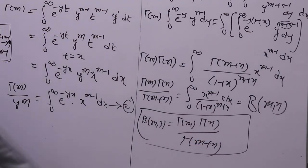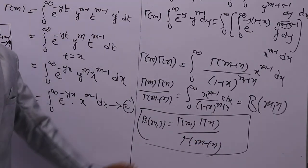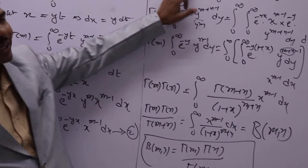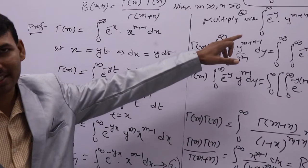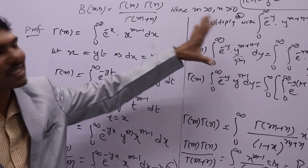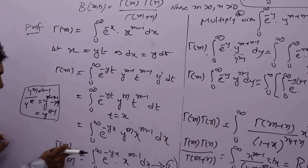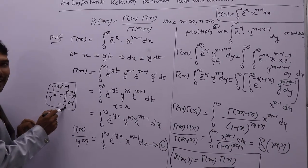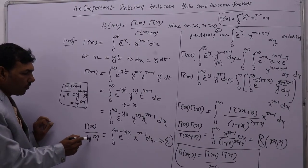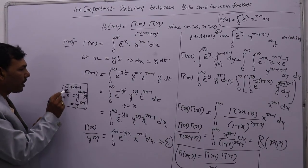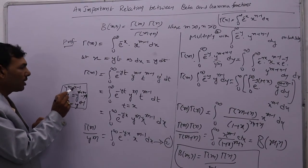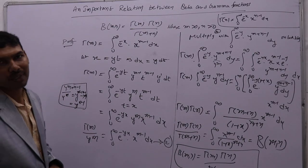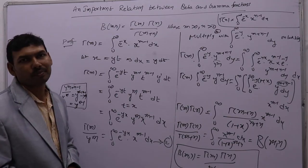Hence proved — the very most important relation between beta and gamma. Are you clear? Simply, you need to remember how to multiply with this term. To get gamma(n) here, you should get y power n minus 1. How? If you write y power m in the numerator with m plus n minus 1, the m's cancel, and you will have n minus 1. That is the logic. Clear?